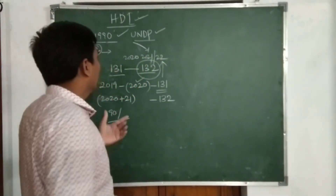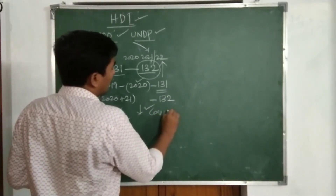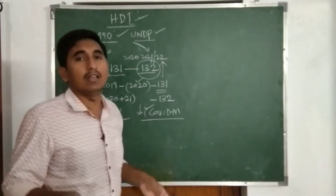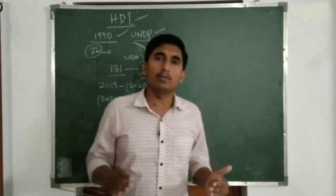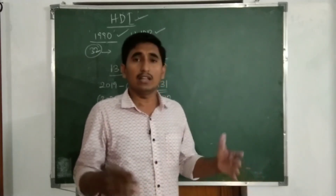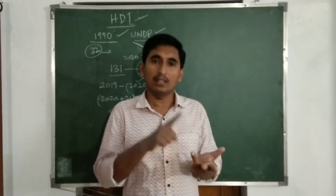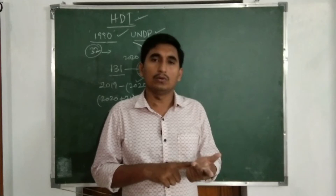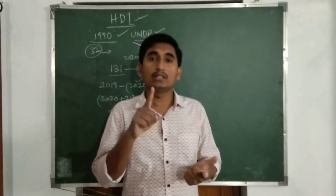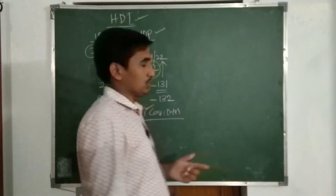In the HDI report, India's HDI score is not good. The main reason is COVID-19 — the COVID-19 pandemic. We have to explain human development. The three dimensions are: first, long and healthy life; second, education; and third, living standard.